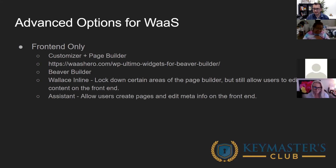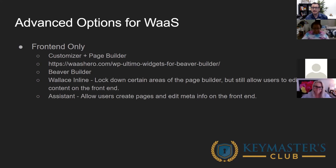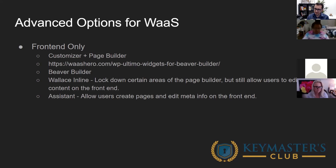Another plugin I've just been introduced to is called Assistant, made by the Beaver Builder crew. This was the missing piece for me — customers couldn't create new pages or edit things like permalinks or schedule posts in the future, because those things can only be done on the backend. Well, Assistant allows you to do that stuff on the front end. It lets users create pages, edit meta information for pages, posts, and custom post types — all on the front end. With these plugins combined, you can get about 90% of the way to front-end-only access.